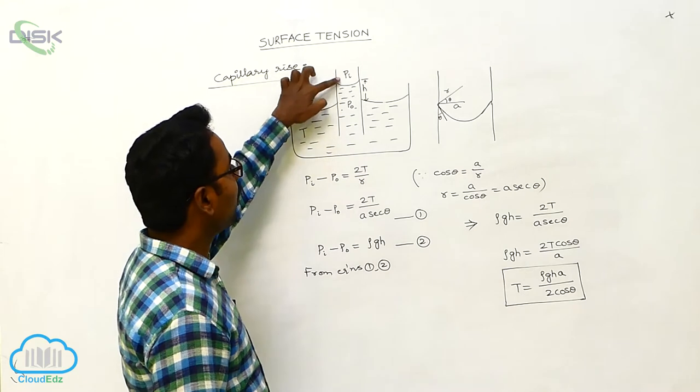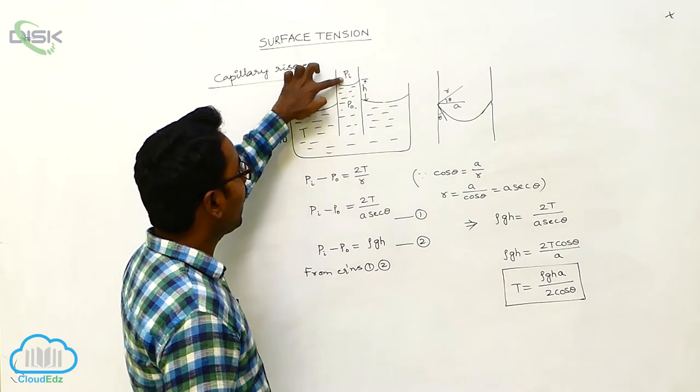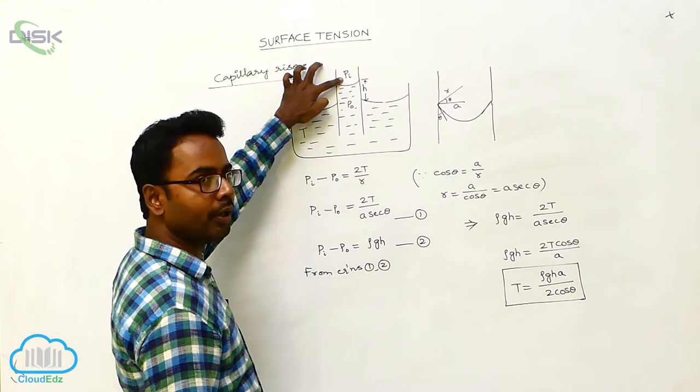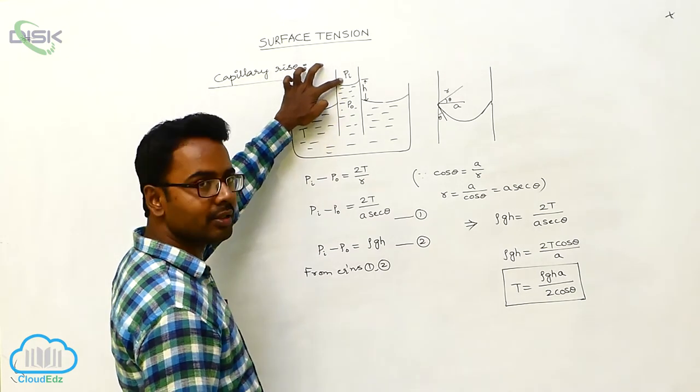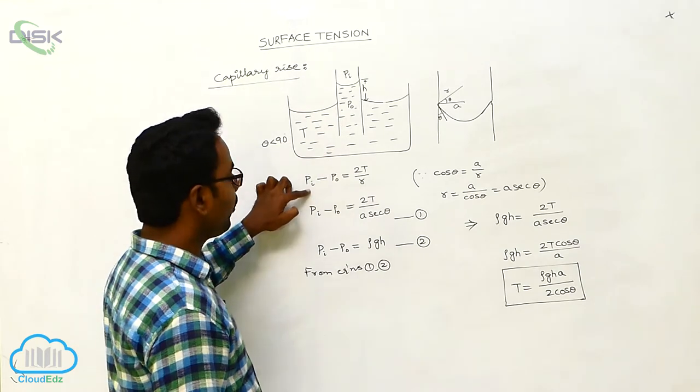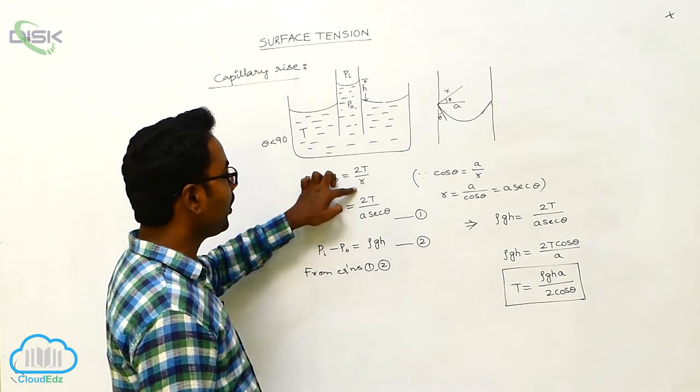If the shape of the meniscus is concave, the pressure above the concave meniscus is Pi, and below the concave meniscus is P0. Here, Pi is greater than P0, so we can write Pi minus P0 is equal to 2T by R.